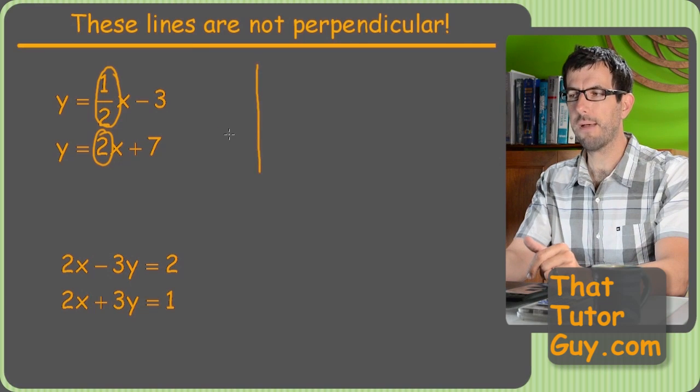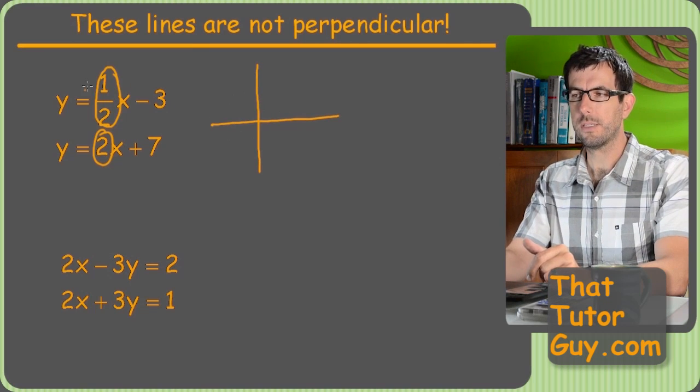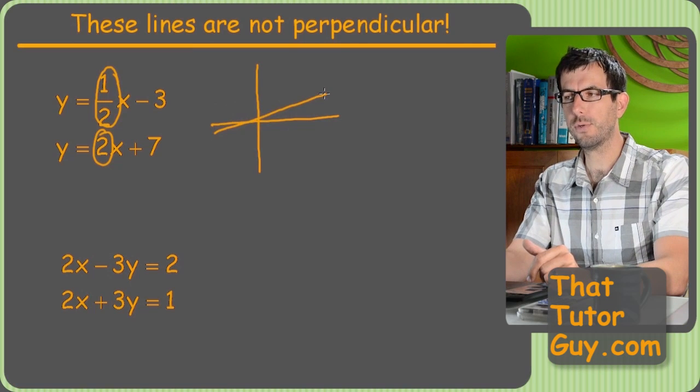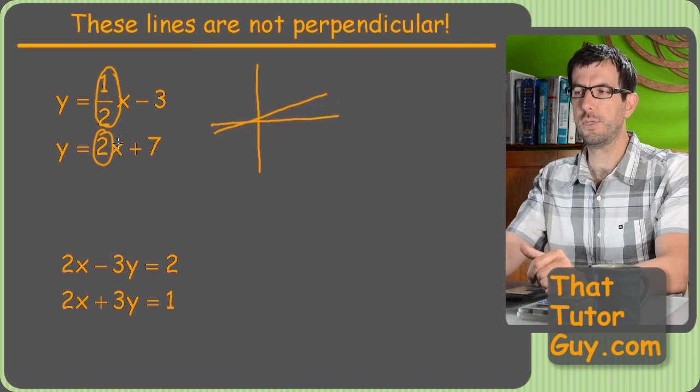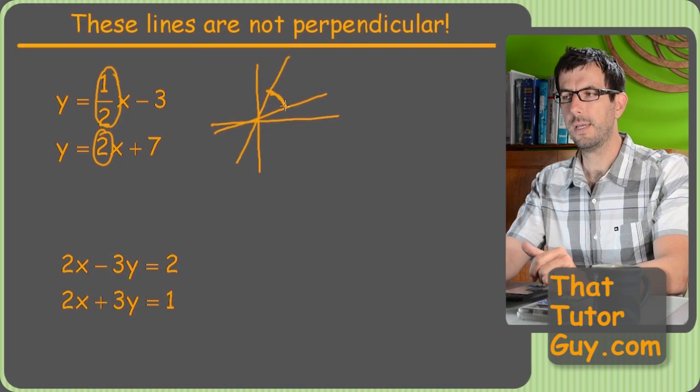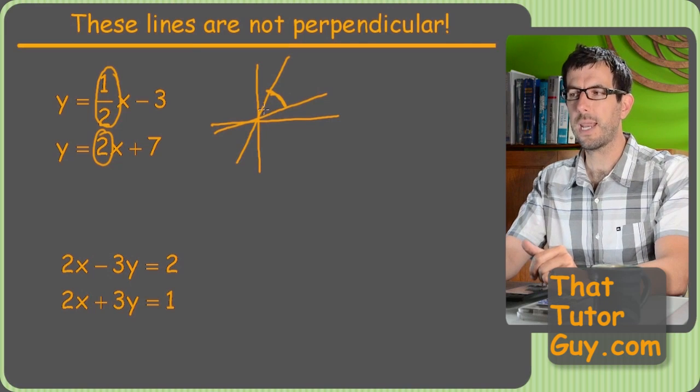And you can see that if you ever want to graph these things, a slope of one-half, positive one-half is up to the right, but it's a fraction, so it's kind of a gradual increase. And then positive two is still going up to the right, but faster. It's more like this. But either way, you can see that these are pretty close. Definitely not 90 degrees.